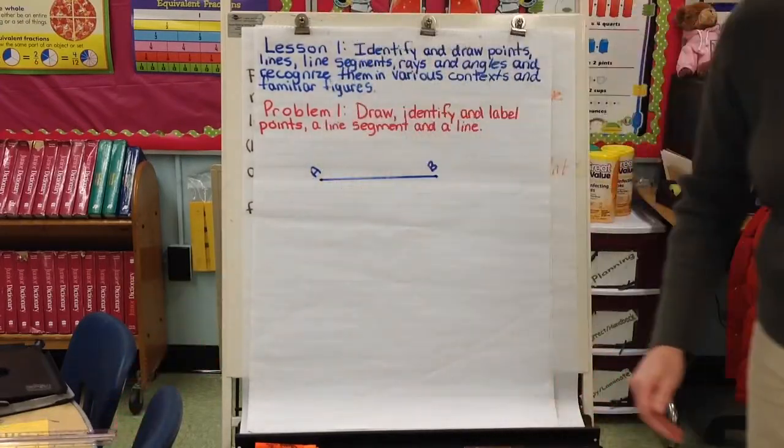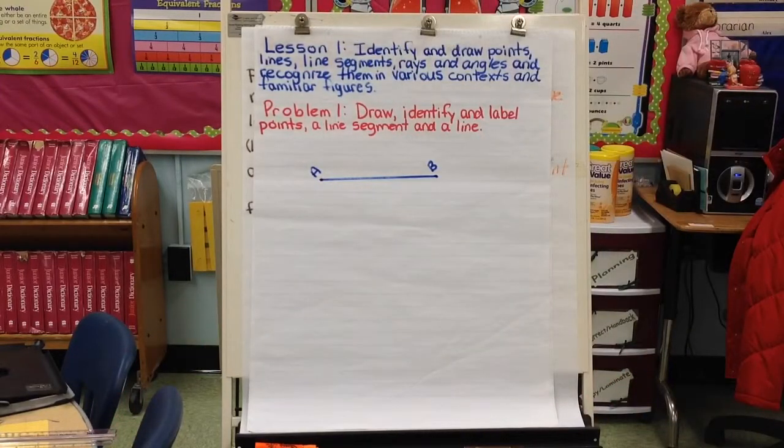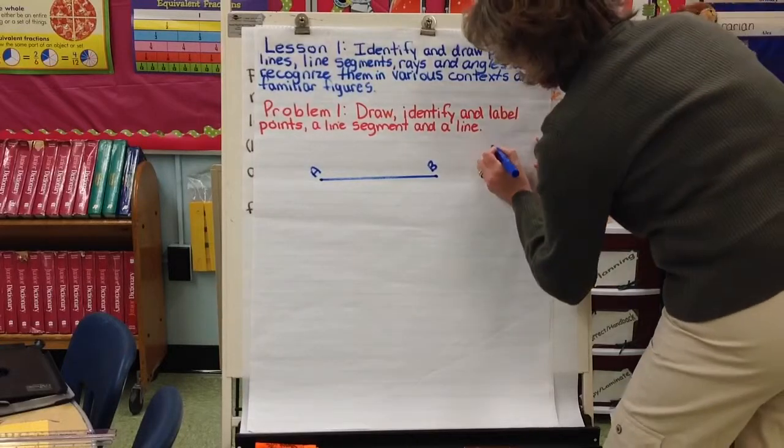We have now connected our two points. Notice that there are end points. This is a line segment. A line segment has two end points. And this is line segment A, B.